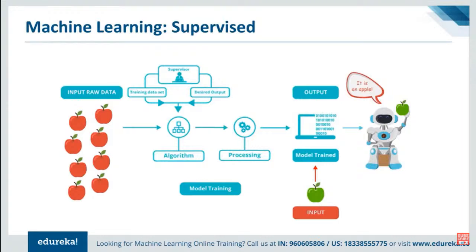Let me simplify the definition of supervised learning. We can rephrase the mathematical definition as: a machine learning method where each instance of a training data set is composed of different input attributes and an expected output. The input attributes can be of any kind of data — it can be a pixel of an image, a value of a database row, or even an audio frequency histogram. For each input instance, an expected output value is associated, which can be discrete representing a category, or a real or continuous value. The algorithm learns the input patterns that generate the expected output.